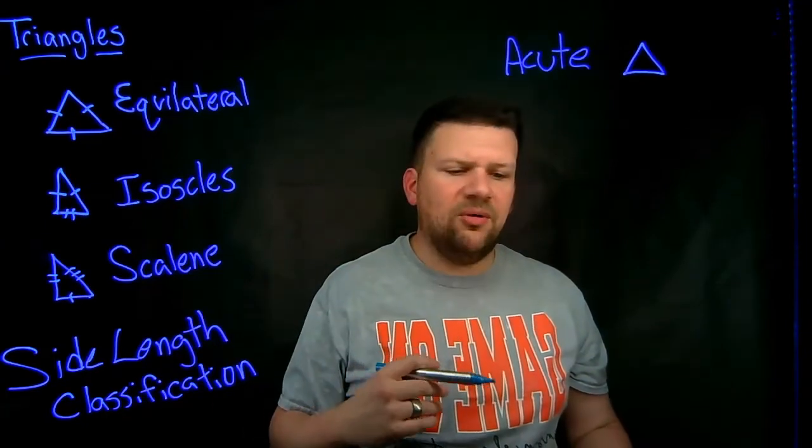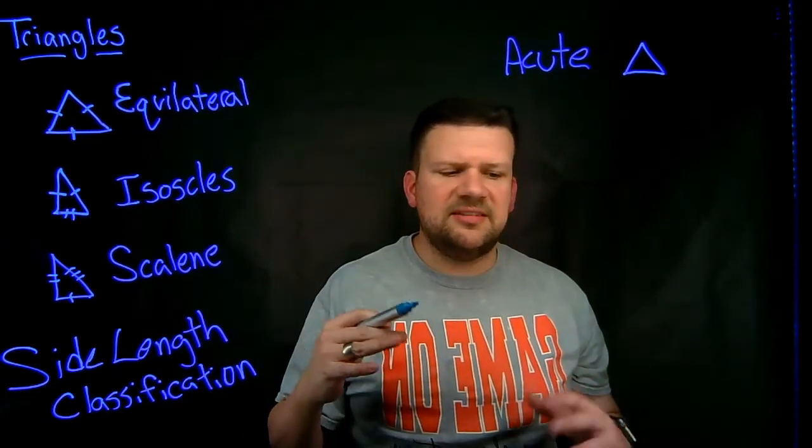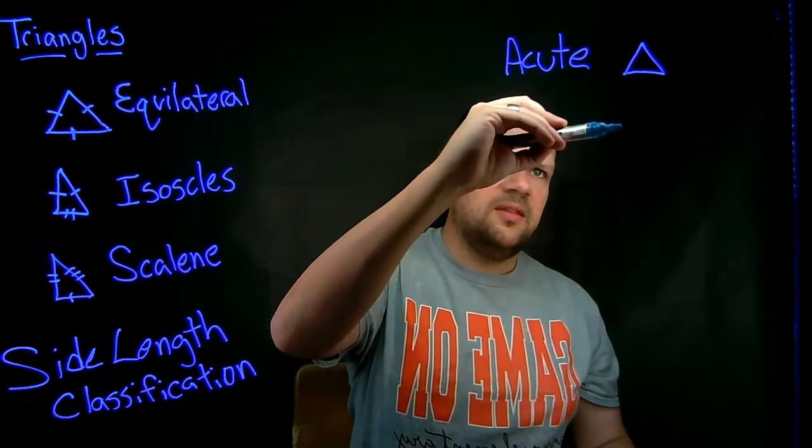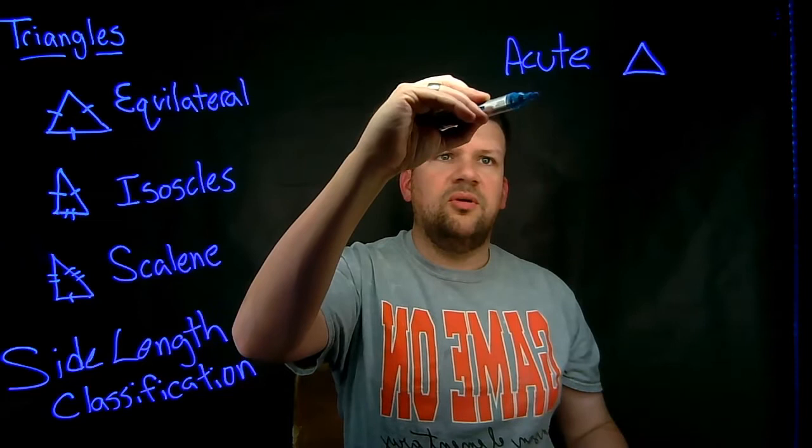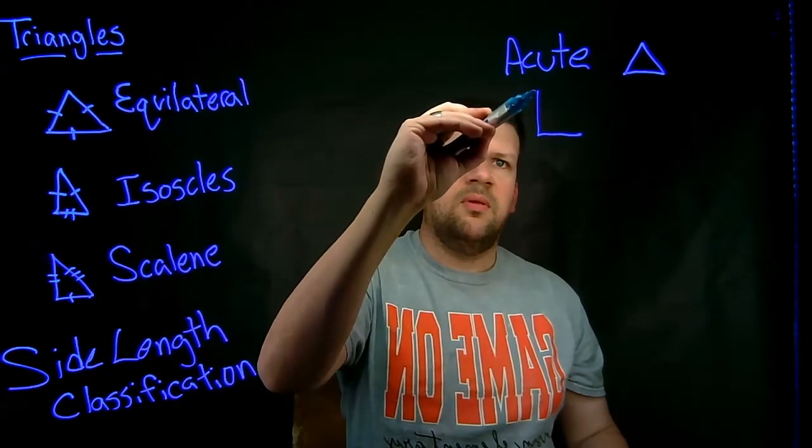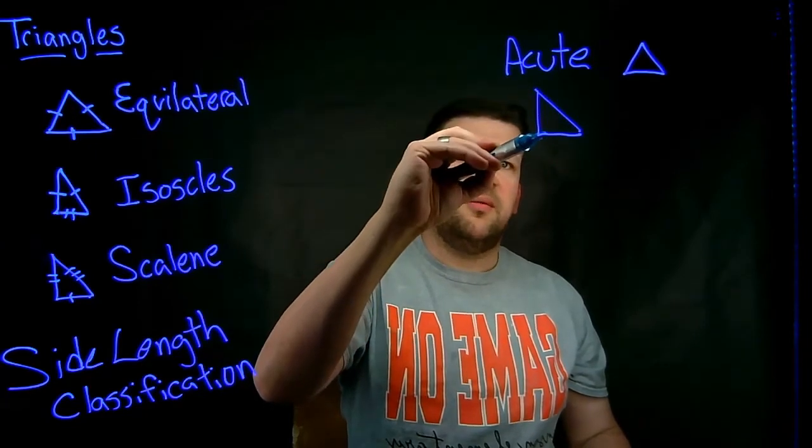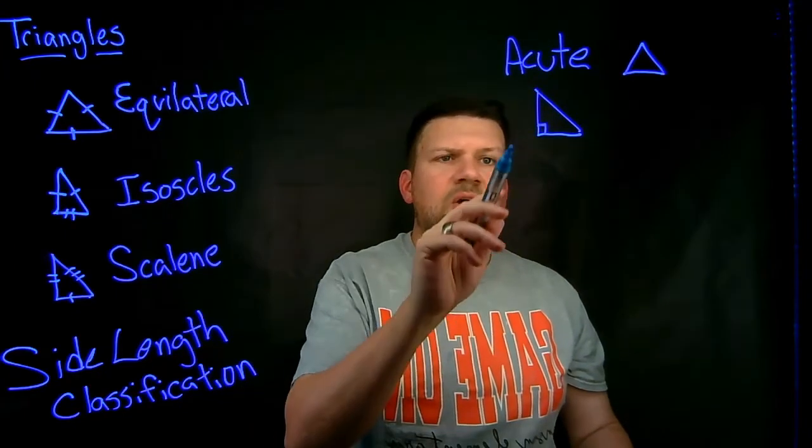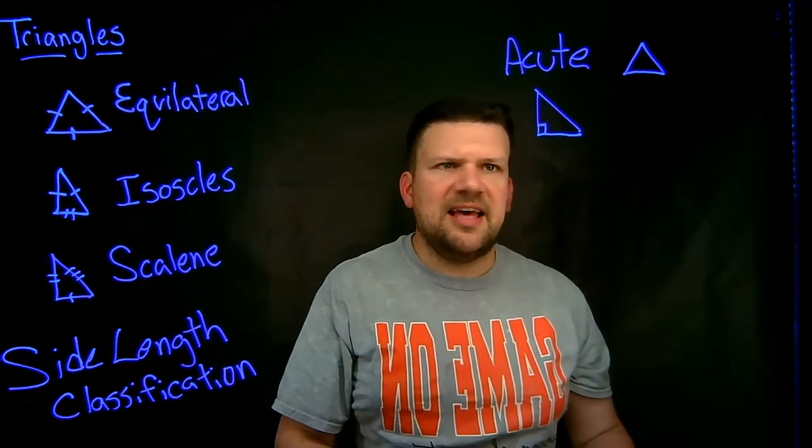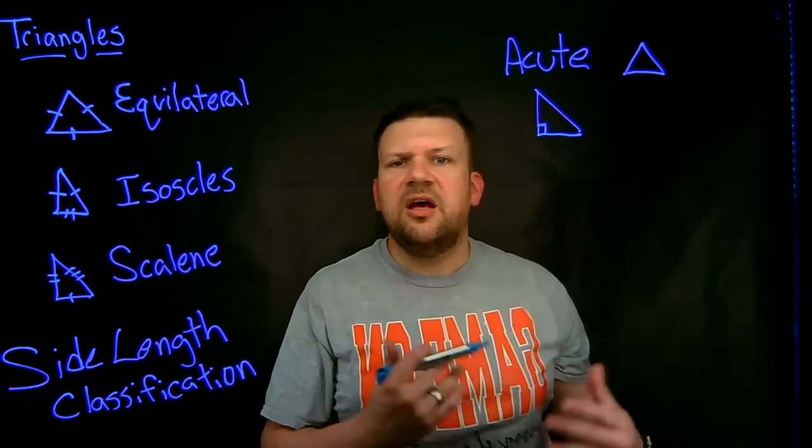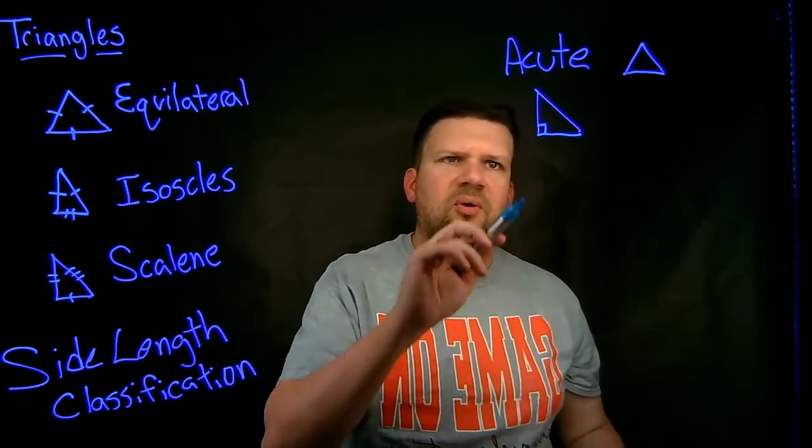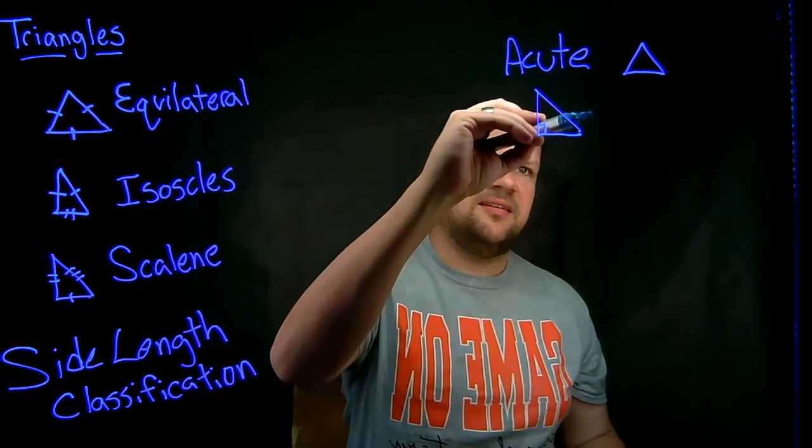An acute triangle has all the angles less than 90 degrees. The next one looks something like that and it will normally have a box down there in the bottom. What that box means is that is exactly 90 degrees, otherwise known as a right angle, so we'll of course call this a right triangle.